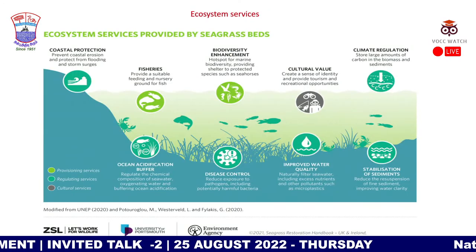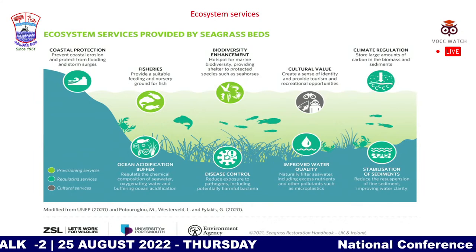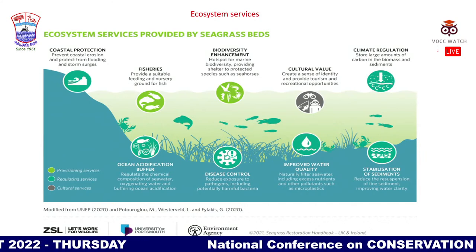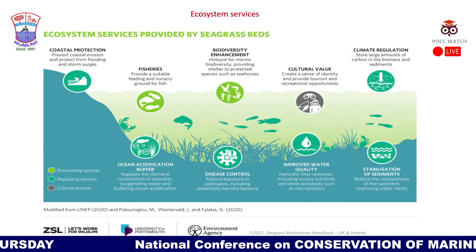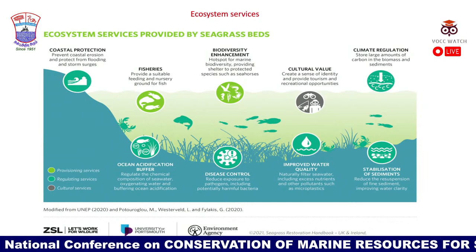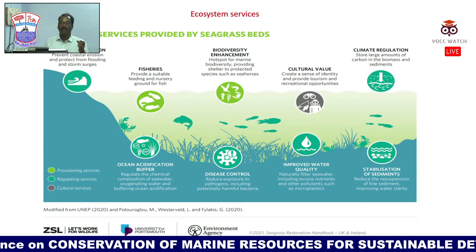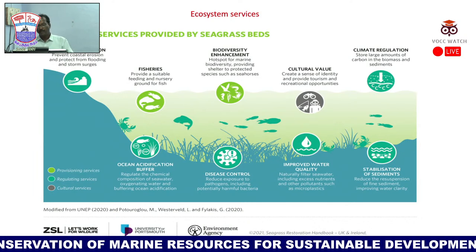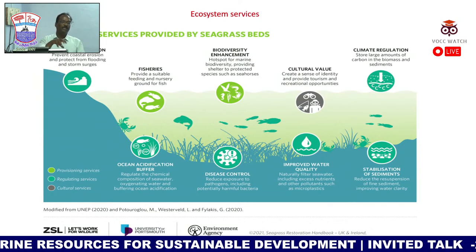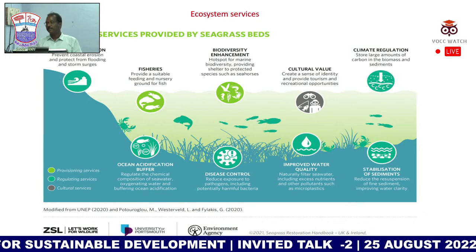Seagrasses are ecosystem engineers: they protect coasts from erosion, flooding, and storms; increase fishery resources and biodiversity; support cultural identity and coastal tourism; regulate climate by absorbing carbon; act as a buffer against ocean acidification; trap bacteria and suspended particles; improve water quality by filtering nutrients; and stabilize sediments with their strong root systems, even withstanding cyclonic storm surges.